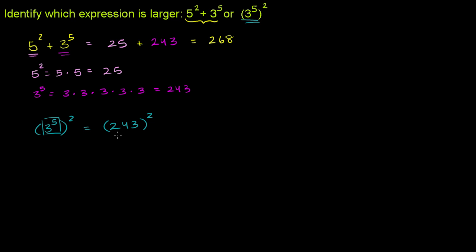They just want to know which expression is larger. The first expression is only 268. The second expression — the number is a little bit smaller than 268, but it's that number squared. This is 243 times 243, which is going to be a much larger number than 268. So at this point you should already say this is a much larger number than that. We don't know the exact number yet, but if they just want to know which expression is larger, it's definitely going to be this one.